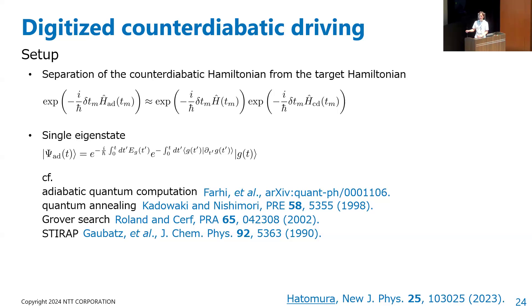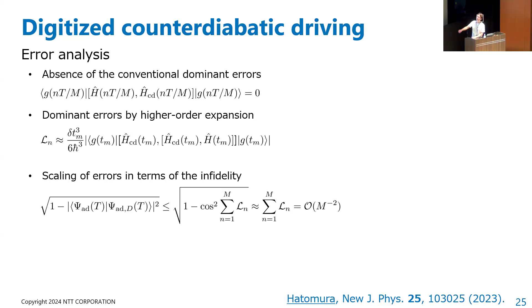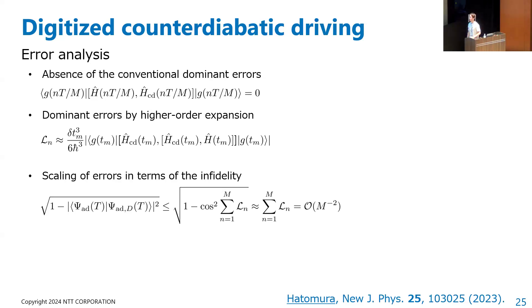The digitization error is universal. Under the assumption that the biggest error in the field is the dominant contribution, I find that the dominant error becomes zero — specifically, the commutator of the target Hamiltonian and the counter-diabatic Hamiltonian becomes zero. This is because the expectation value of the commutator of the Hamiltonian and counter-diabatic Hamiltonian in the energy eigenstate basis becomes zero due to the intrinsic nature of counter-diabatic driving. The error therefore scales as cubic in the time step — higher than the standard second-order scaling.